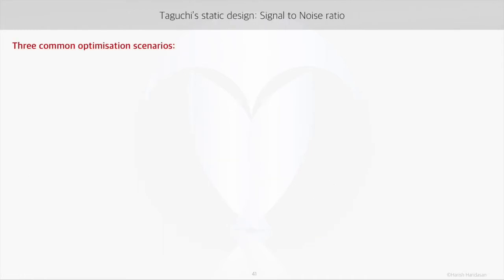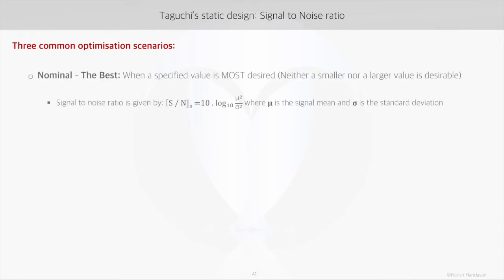In static designs, we normally come across three scenarios for the signal to noise ratio. First is when we strive to determine a fixed optimal value for the response—this fixed specific value is the most desirable response level, like depositing a fixed layer of silicon on silicon wafers. In this case, the signal-to-noise ratio is given by 10 times log10 of the ratio between square of the signal mean and square of sigma, which is standard deviation.